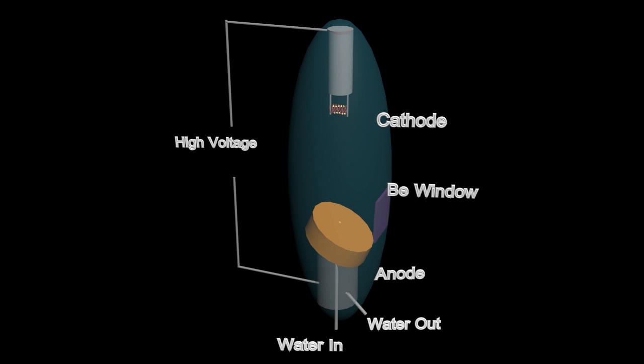On the image you can see the main components of the x-ray tube. The whole system is in vacuum which is achieved with the help of the surrounding glass bulb.